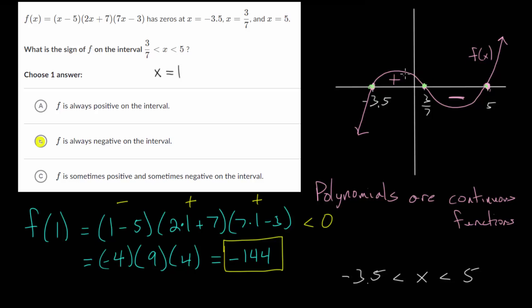And you would have to check a value in this interval and in this interval to determine if it did switch sign going from one interval to the next. But you know at least between two consecutive zeros that it's always positive or always negative.